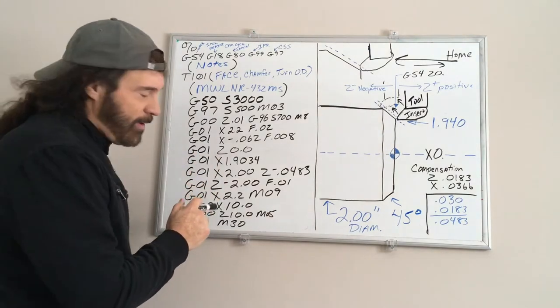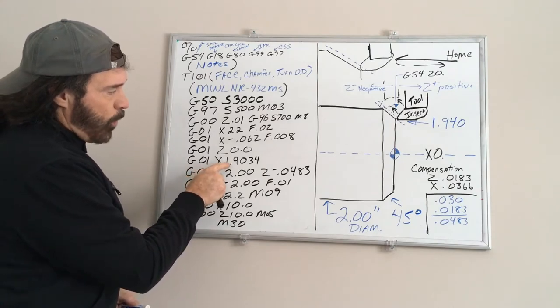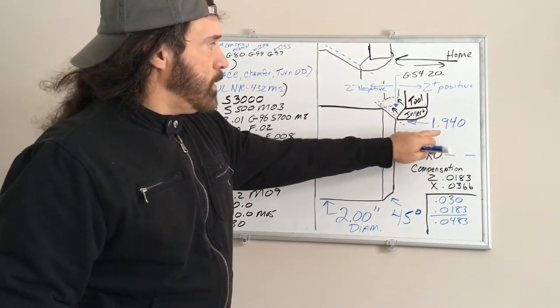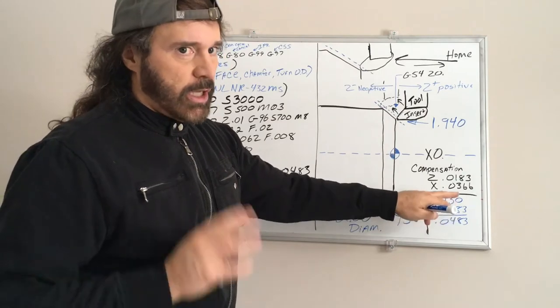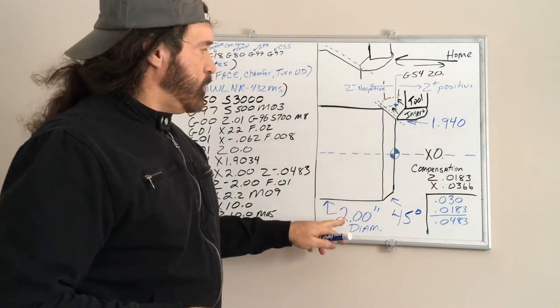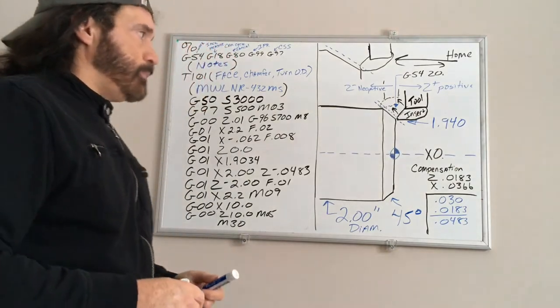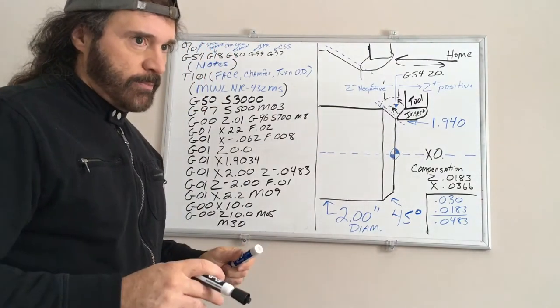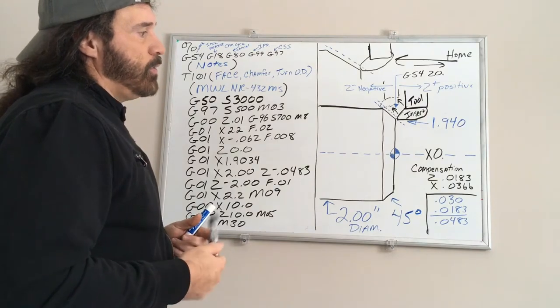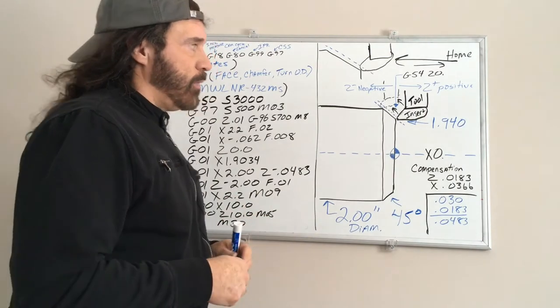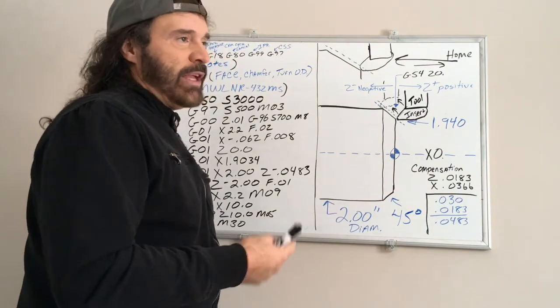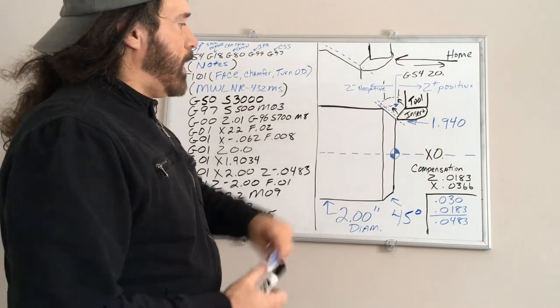This is where you have to do your math. I want to go up to a dimension of X1.9034, and the reason I got that number - if you wanted to do a 30 thousandths chamfer you have to double that, so 60 thousandths subtracted from two inches is 1.940. Anybody lost yet? Let's hope not.